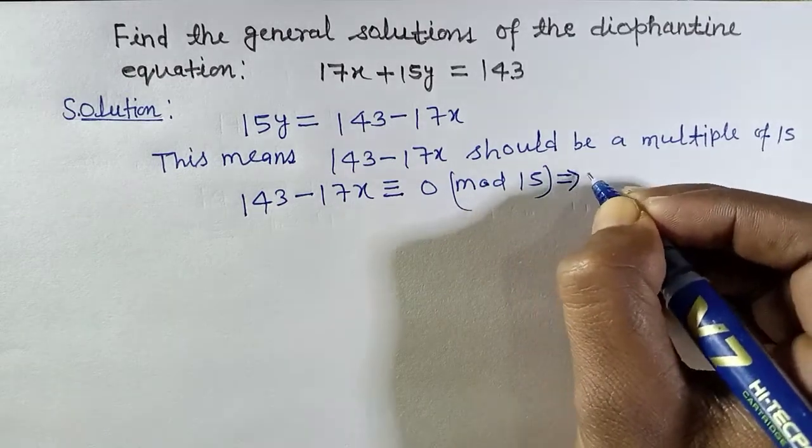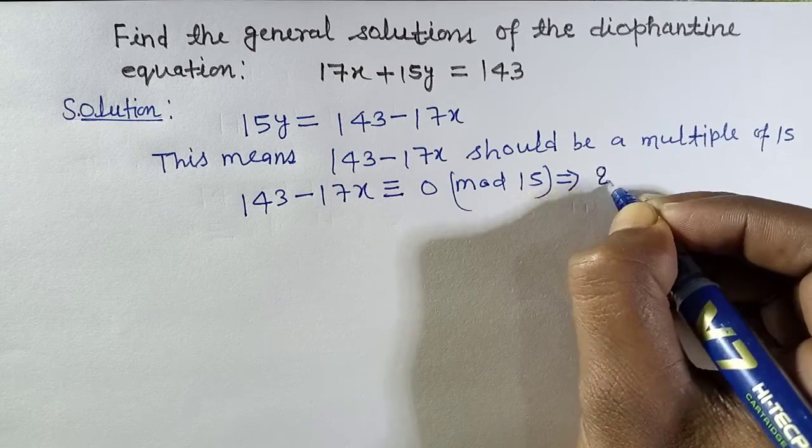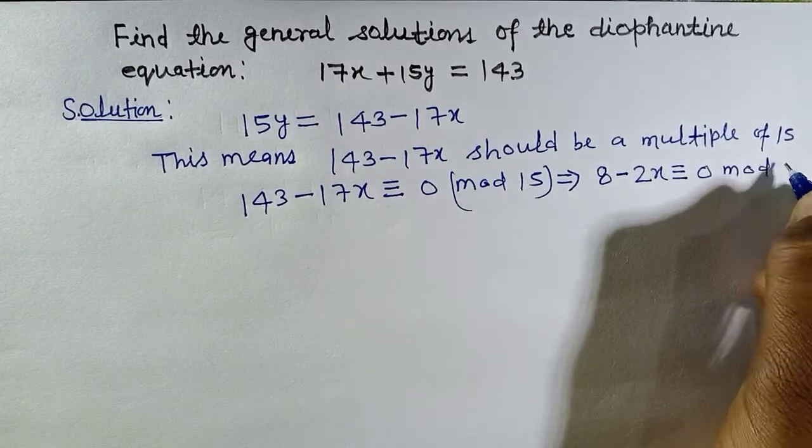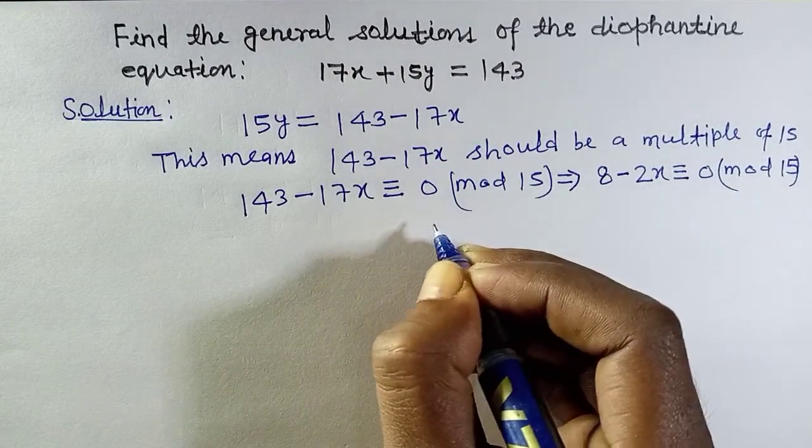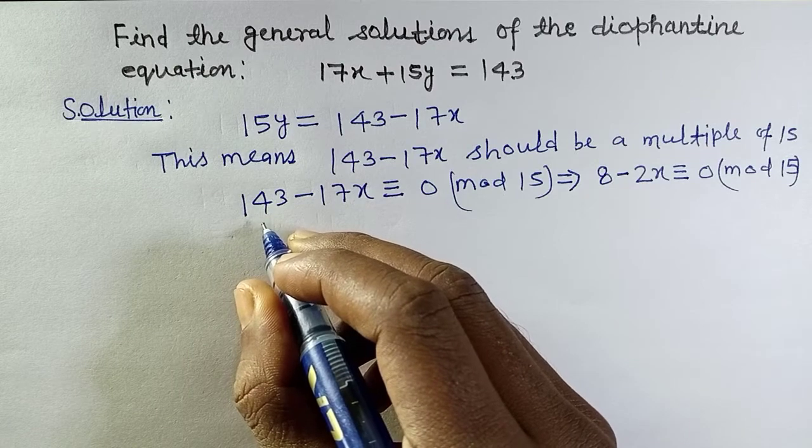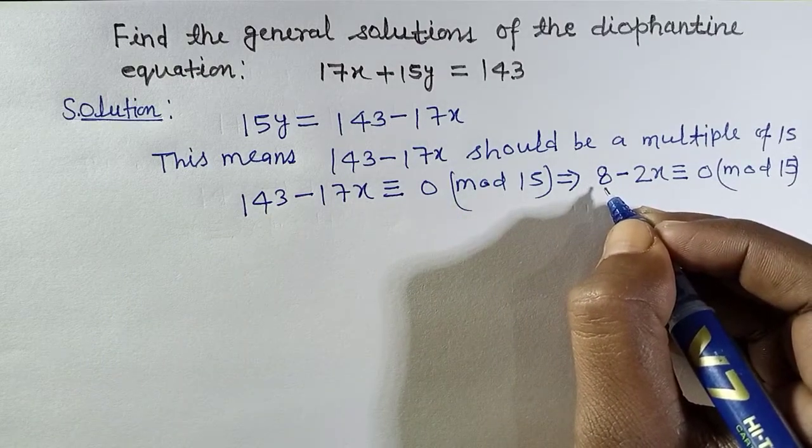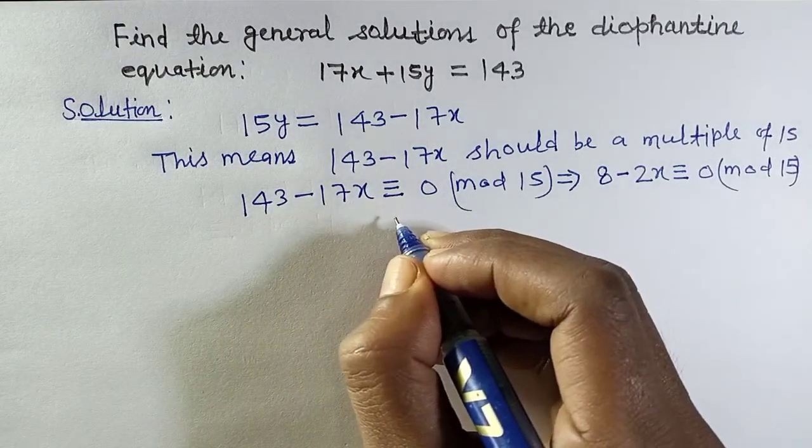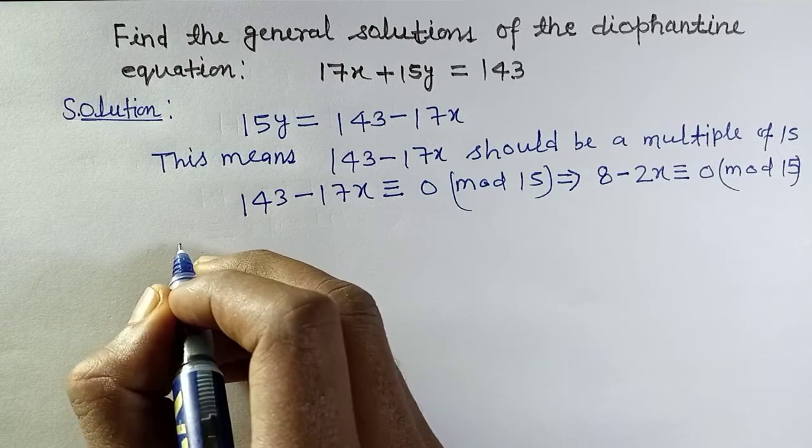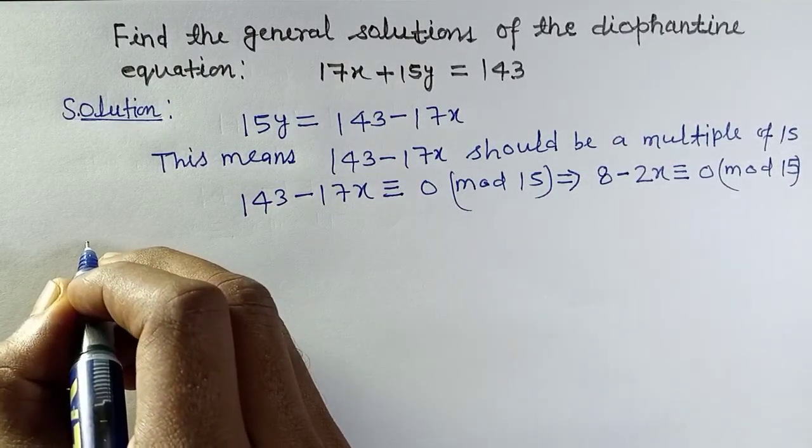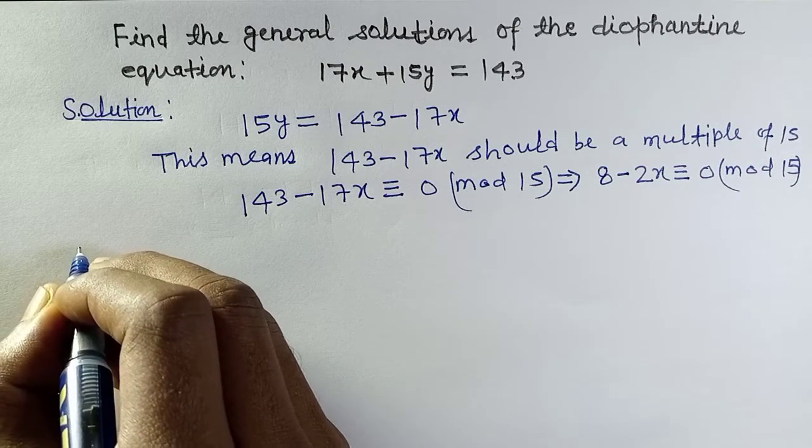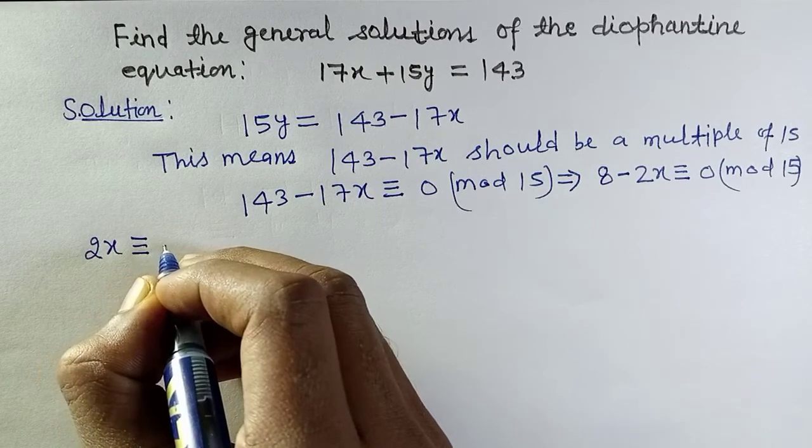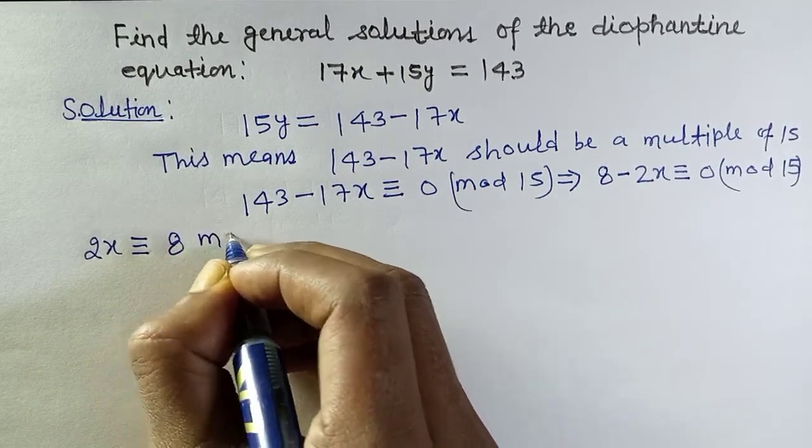So we can write 143 minus 17x is congruent to 0 mod 15. This implies 8 minus 2x is congruent to 0 mod 15, because if we divide 143 by 15 we get 8 as a remainder. Similarly, if we divide 17 by 15 we get 2 as a remainder.